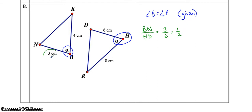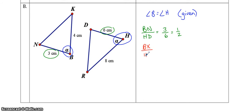Now look at the other side, BK. That is going to correspond with HR. Again, if you start with the vertex that has the angle, you have to start with the vertex that has the angle in this triangle — so HR. And that is equal to 4 over 8, which is also one-half.